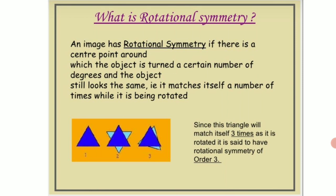Now what is rotational symmetry? An image has rotational symmetry if there is a center point around which the object is turned a certain number of degrees and the object still looks the same. That is, it matches itself a number of times while it is being rotated.